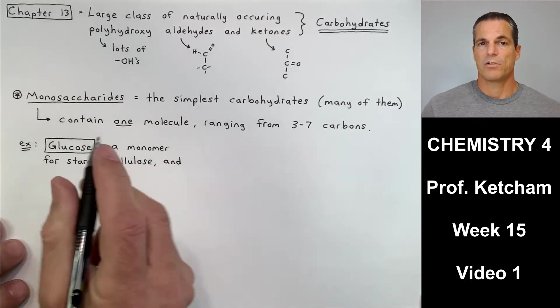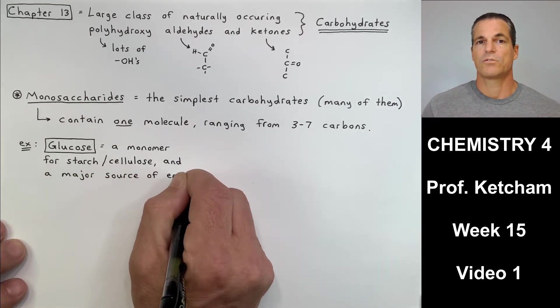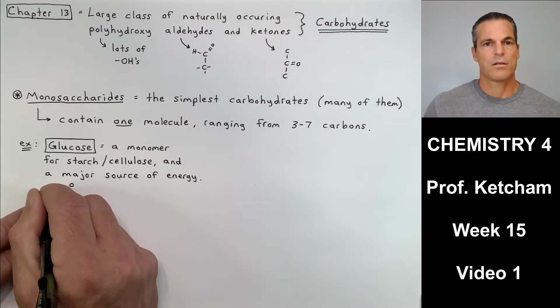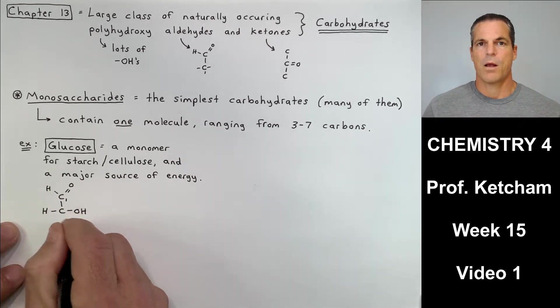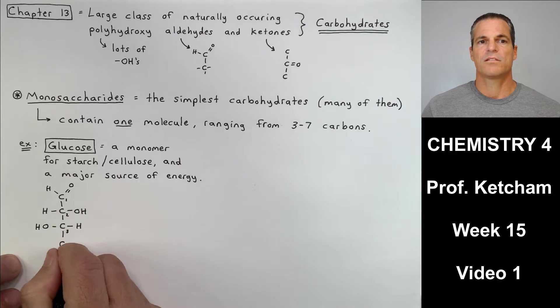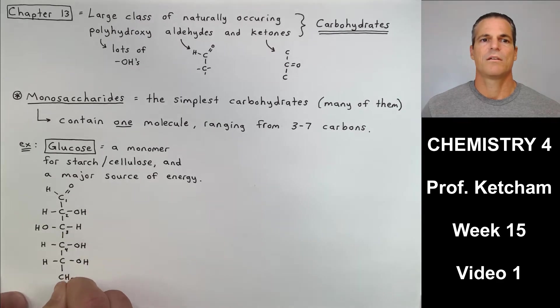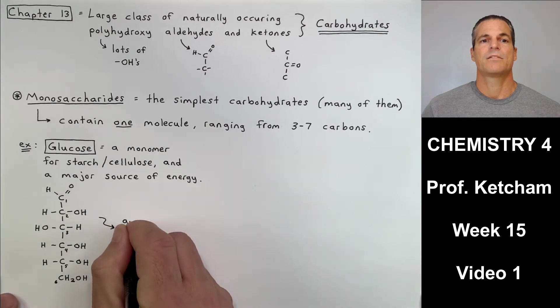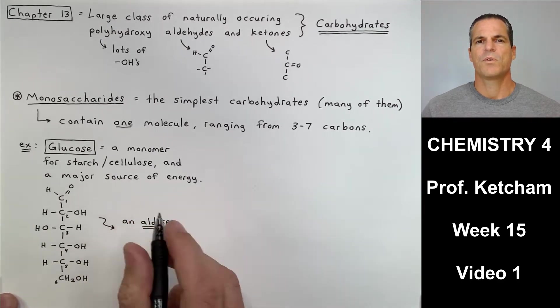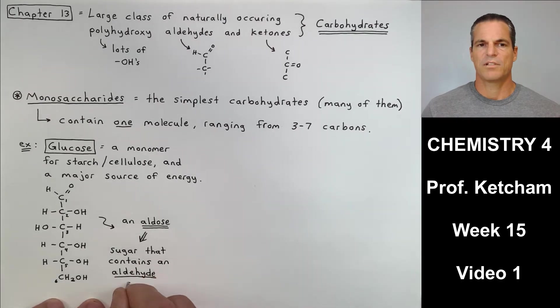Now disaccharides that we're going to learn about are also one molecule, but they're made up of two monomers or two monosaccharides linked together. More on disaccharides a little bit later on, probably video number two. This video today is all about glucose for the most part. Glucose is the most common monosaccharide. It's a monomer or a single building unit for starch, cellulose, and also glycogen. It's a major source of energy. The difference between glycogen in animals and starch in plants is that glycogen just has more branches. We'll just leave it at that.